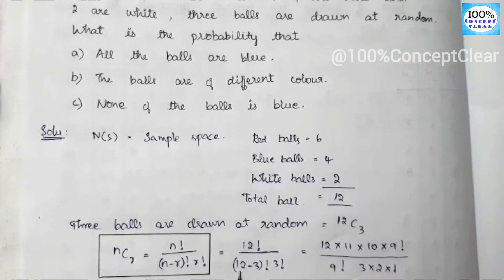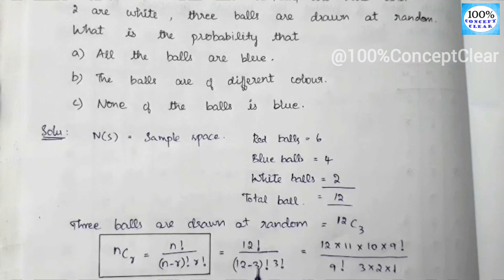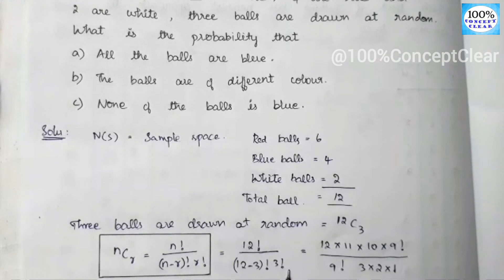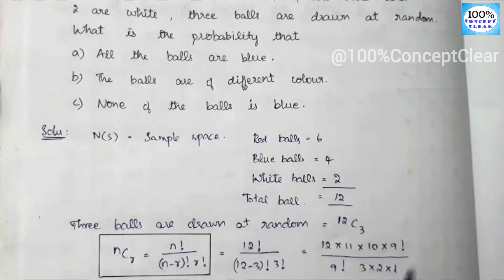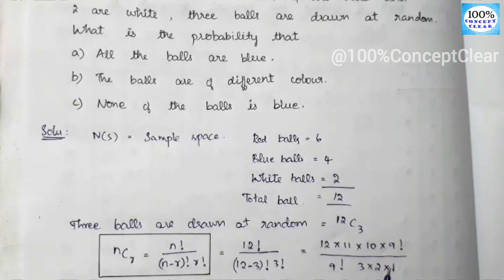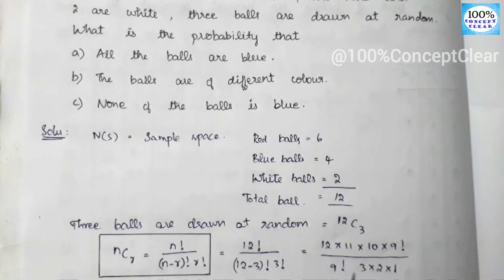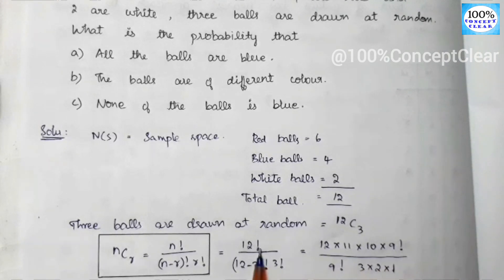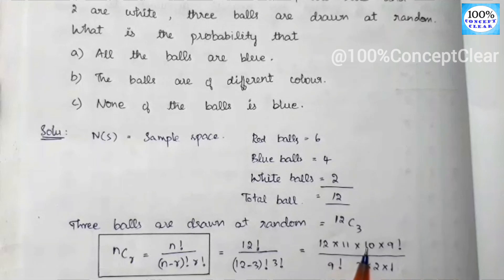12 minus 3 is 9, so we have 9 factorial in the denominator. The 9 factorial terms cancel with the 9 factorial in 12 factorial, leaving 12 into 11 into 10. Then 3 factorial is 3 into 2 into 1 in the denominator.